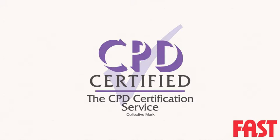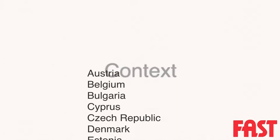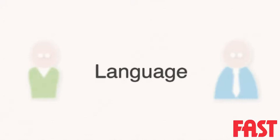First of all, we look at the context that the DPA is set in, why it's needed and which countries it applies to. We then move on to look at the language behind the Act, describing the different parties and who is responsible and protected by it.